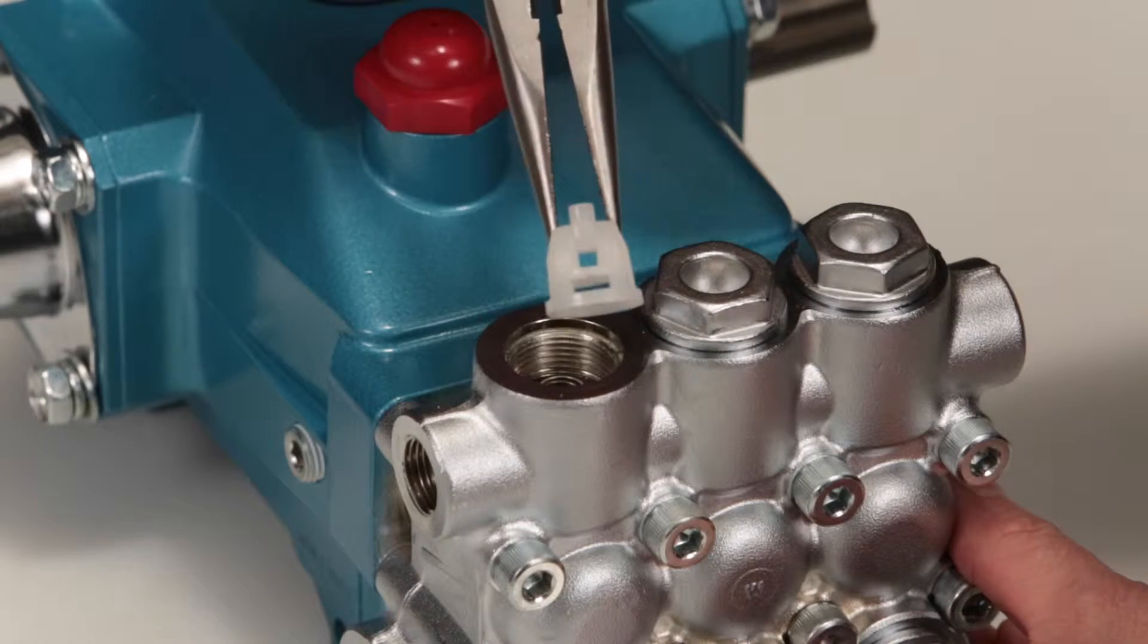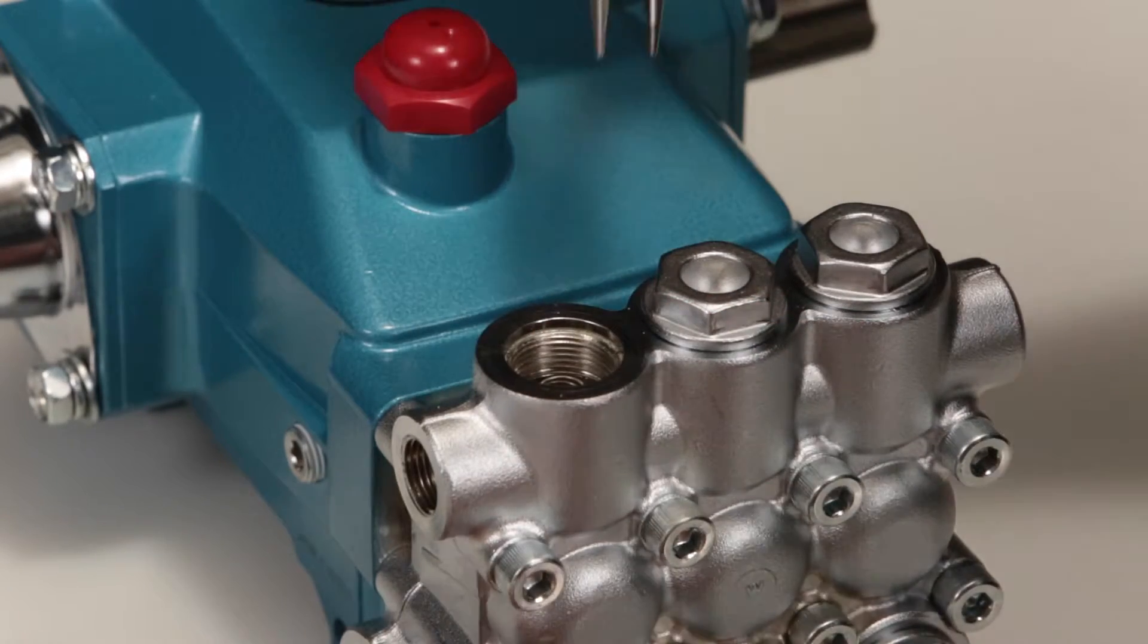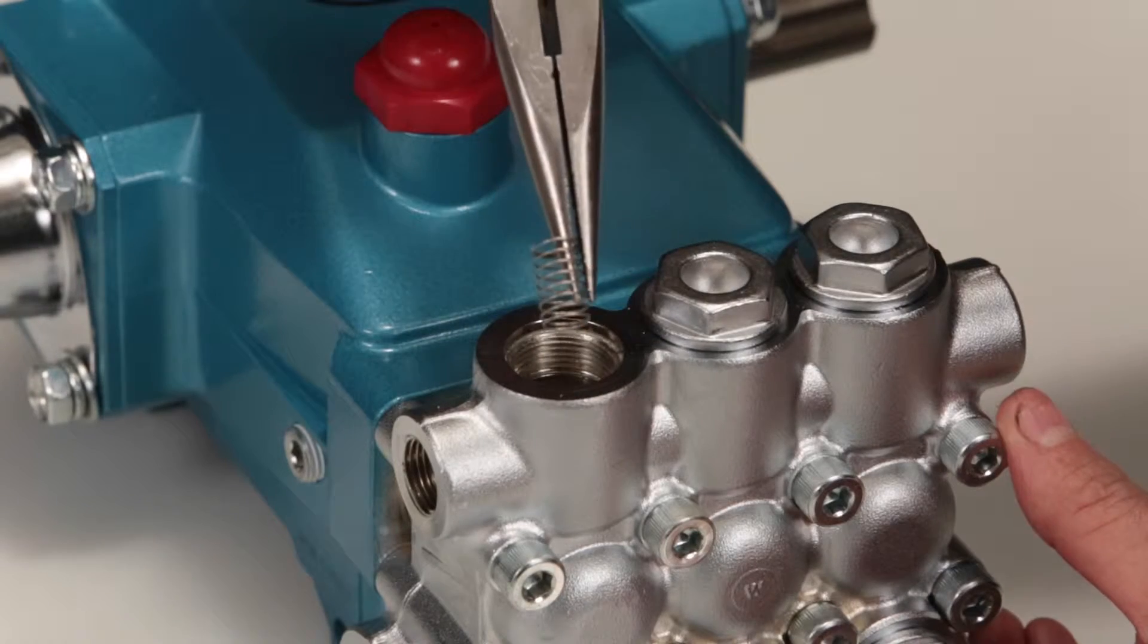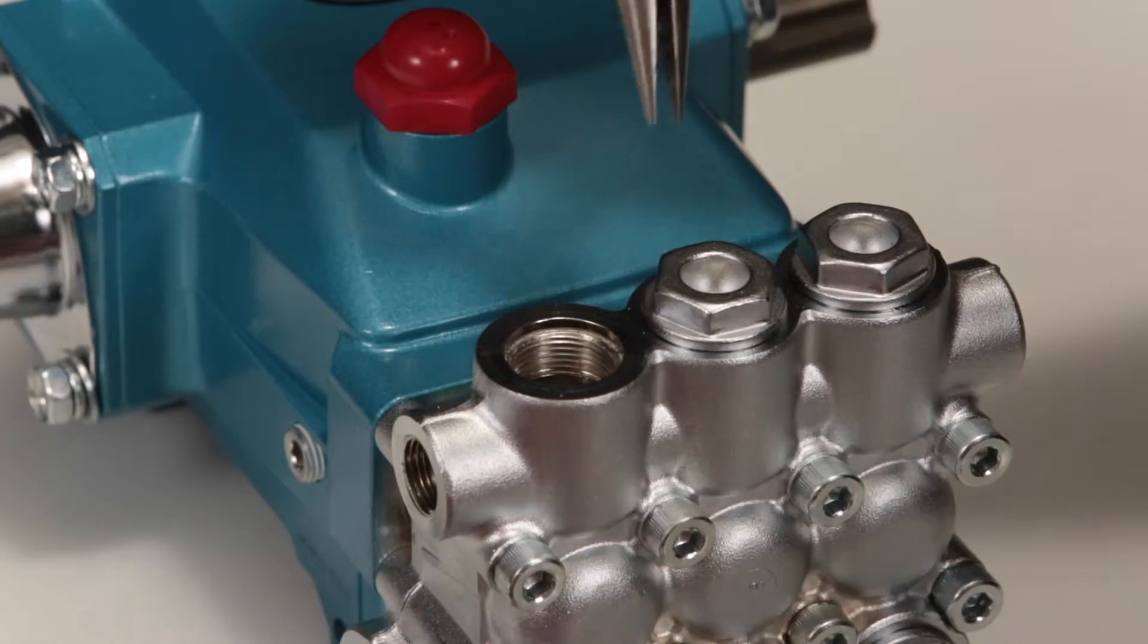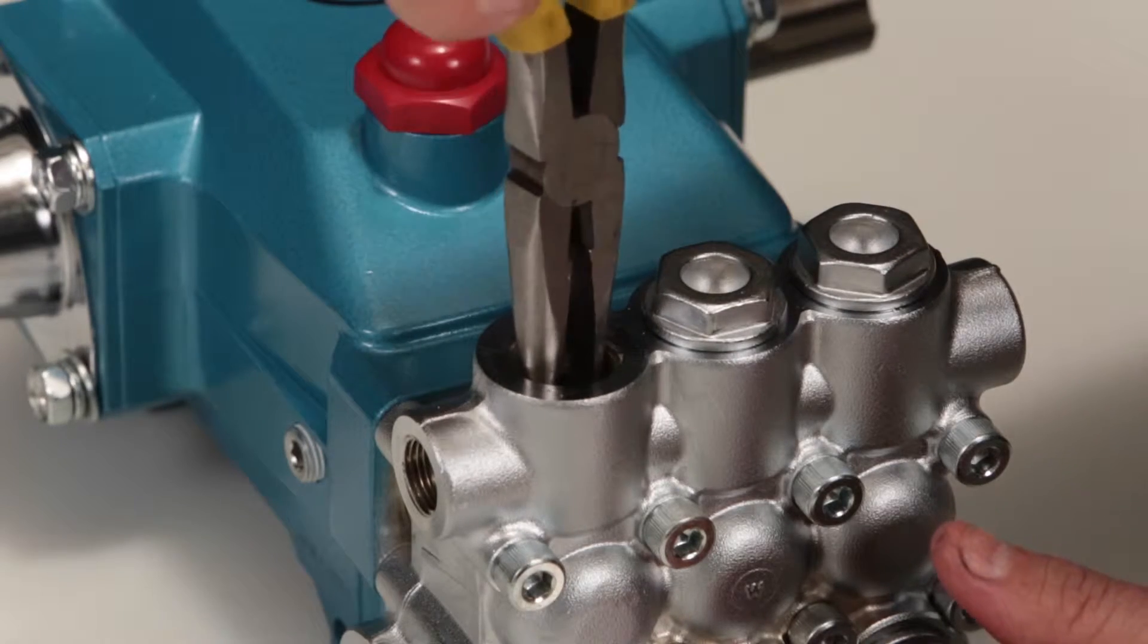If the spring retainer separates from the valve seat when removing, use needle-nose pliers and remove the spring and valve.